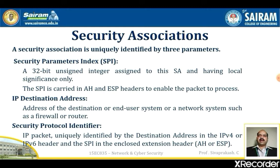The second parameter is the IP destination address — the address of the destination endpoint of the security association, which may be an end-user system or a network system such as a firewall or a router. The third parameter is the security protocol identifier, a field in the outer IP header that indicates whether the association is an authentication header (AH) or encapsulation security payload (ESP) association.